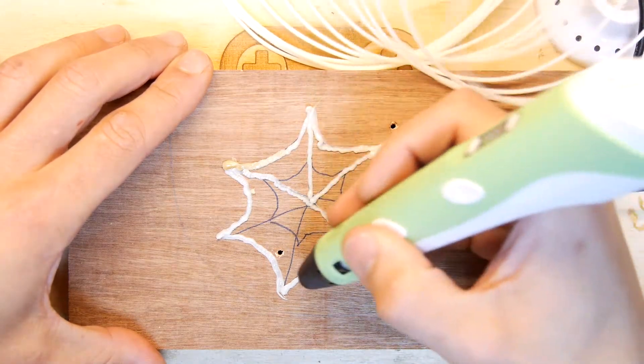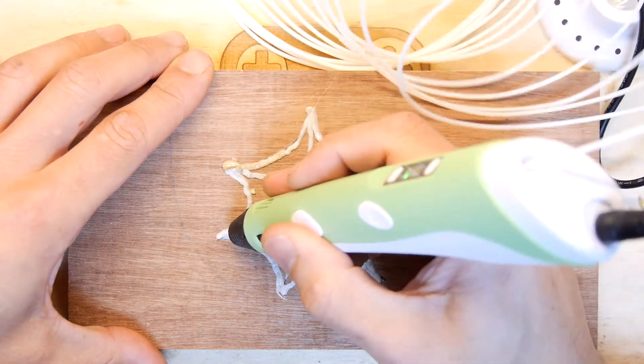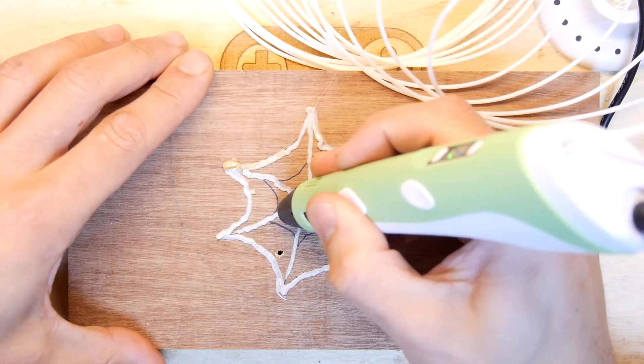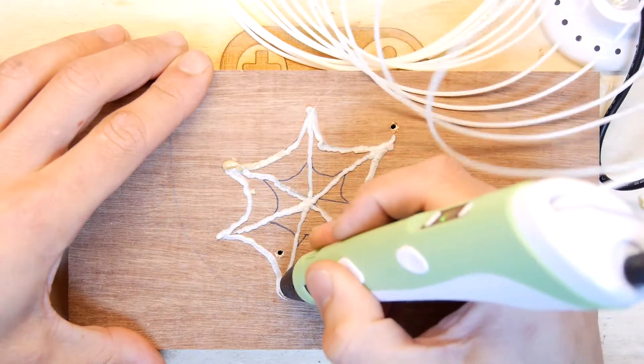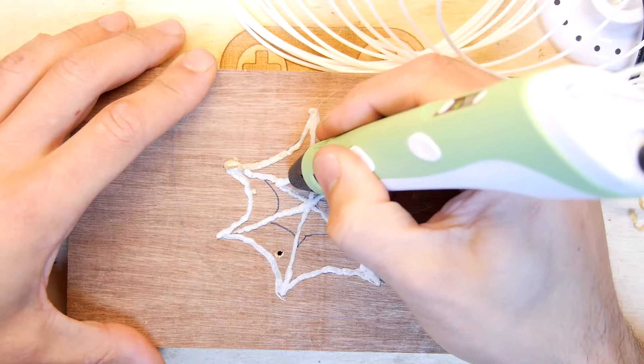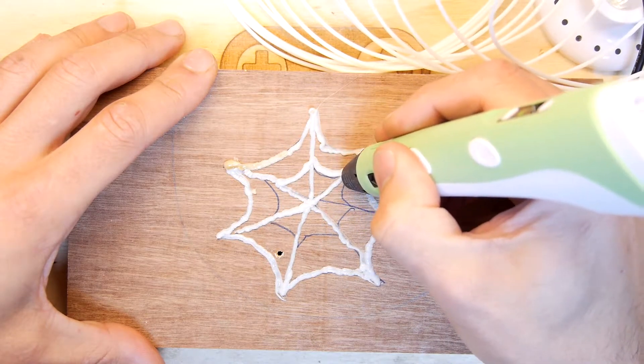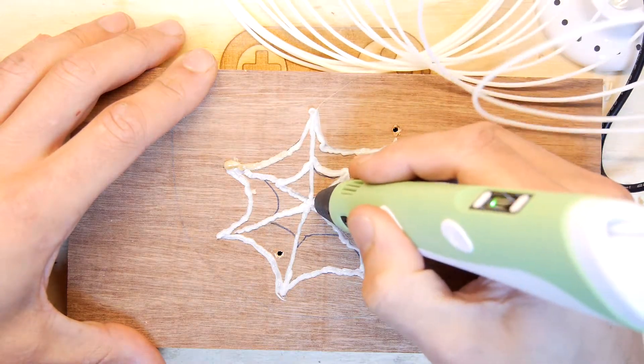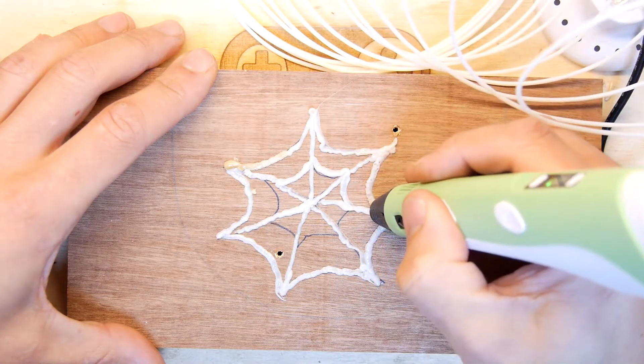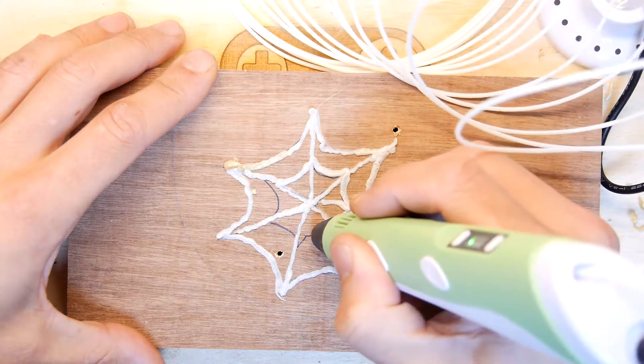And frankly, how much care do you need to take for something your kids are going to chuck around for 20 minutes and then get bored? If you're doing this for cosplay or jewelry, I think you're going to set your pen to the much slower speed. Oh, I forgot a rib here.